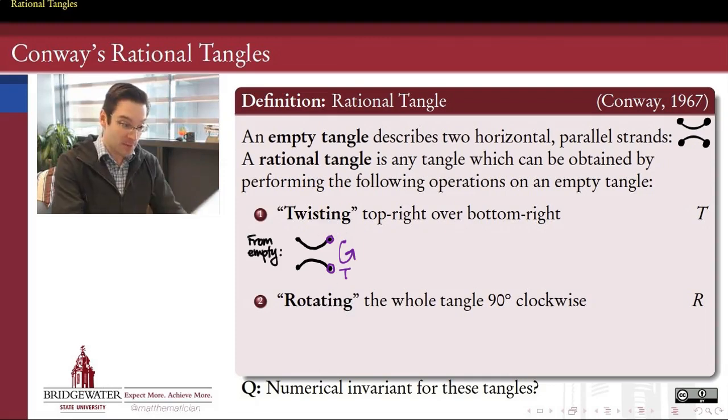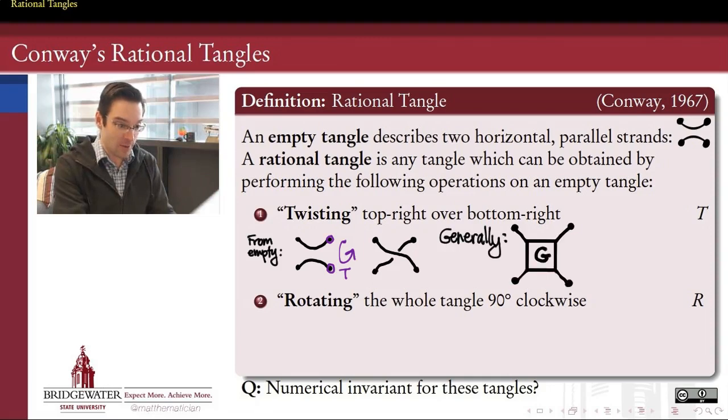The way the twist works is we take the top right vertex and we cross it over the bottom right. So, if we started from an empty tangle and then performed this twist operation, we would get this tangle. And as you can see, this is essentially the simplest way to introduce a crossing into a rational tangle is this one top right over bottom right twist. In general, if I start with a tangle, call it G, applying T, the twist, to that tangle is just going to take those two right-hand vertices and cross them over one another. So twisting is just a way to add one more crossing into a rational tangle.